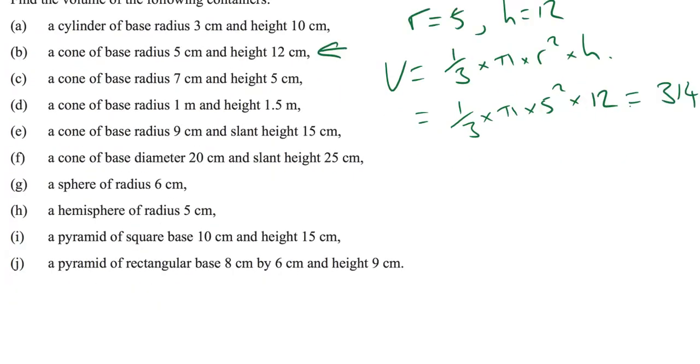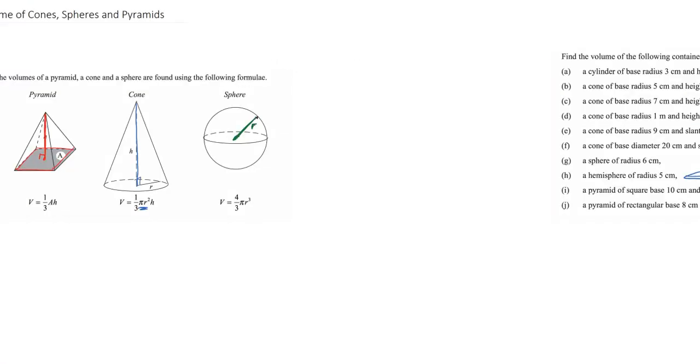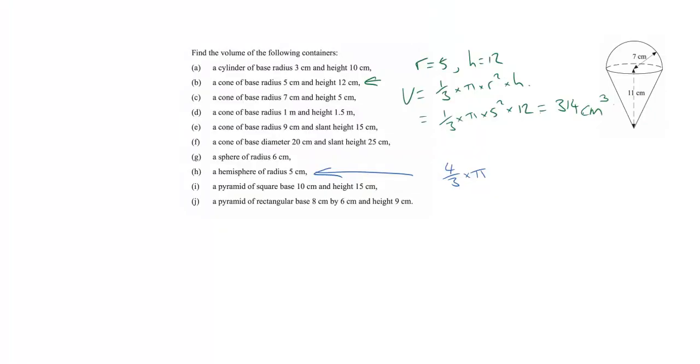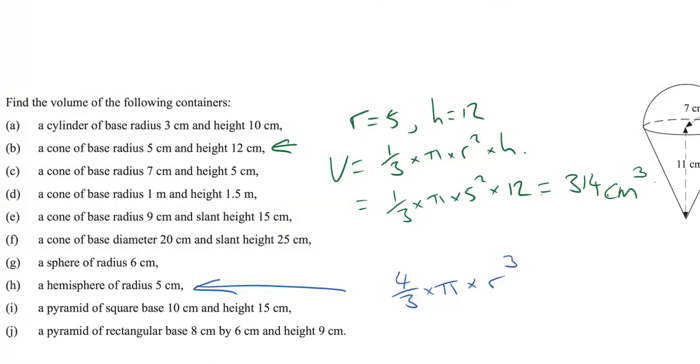Let's do one a little differently now. So let's have a quick look at H. We're going to find a hemisphere of radius 5. So a hemisphere means a sphere that has been chopped into two pieces. Think about a hemisphere like the northern hemisphere and the southern hemisphere. So we have a formula for a sphere and it is 4 over 3 times pi times r cubed.